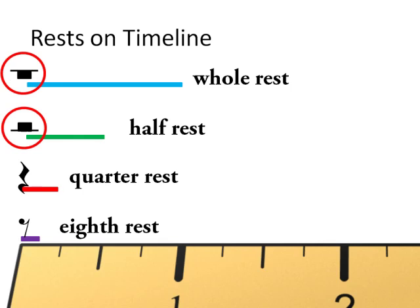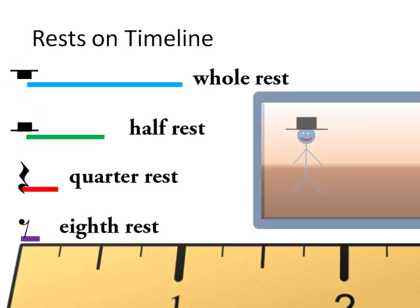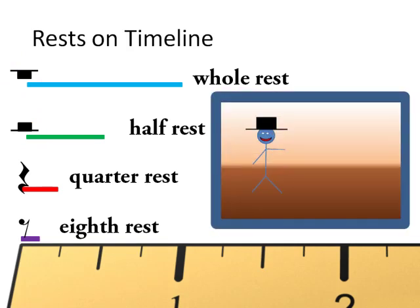To tell them apart, you can think of this: a half rest looks like a hat, and a whole rest looks like a hole.